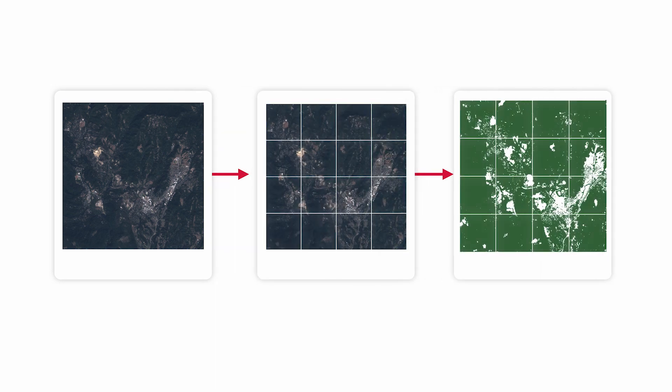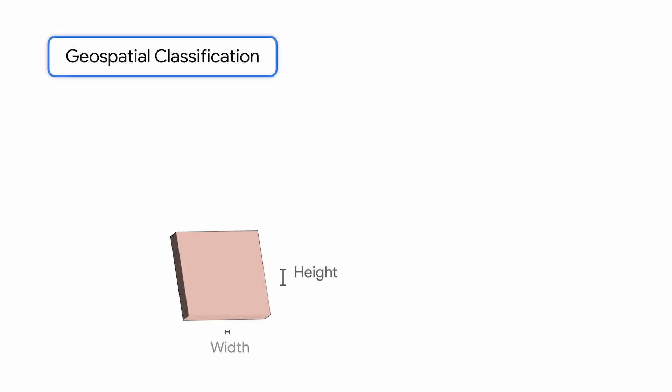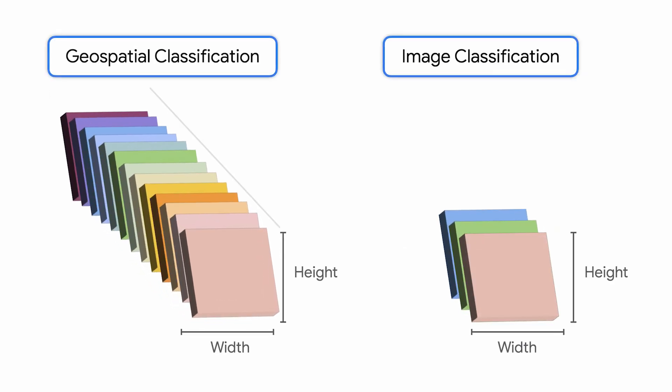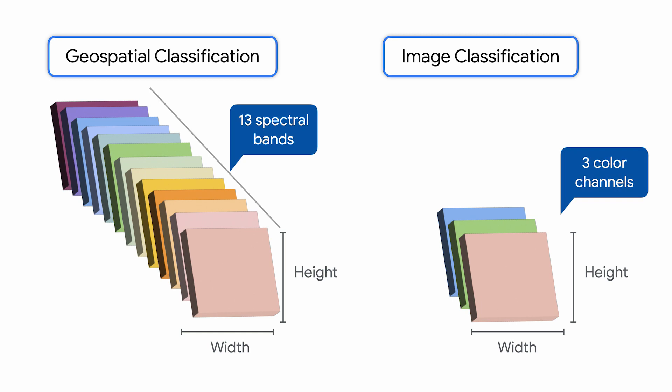Training a model to classify tree species from satellite images is a kind of image segmentation problem, which is classifying every pixel in an image. However, satellite sensors collect a wider range of bands than the typical images based on the three RGB channels.